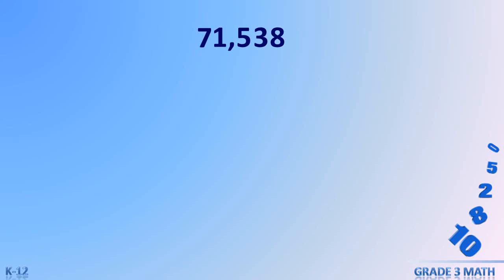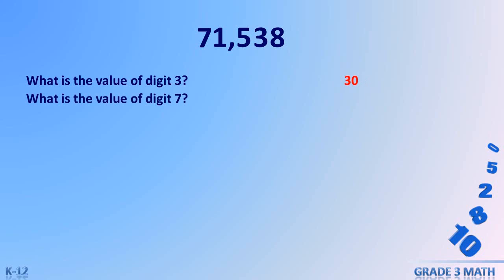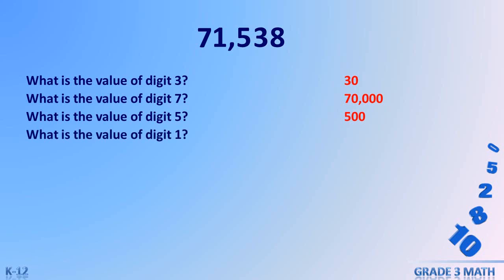Using the number 71538 as an example, try to answer the following questions. What is the value of digit 3? The answer is 30. What is the value of digit 7? The answer is 70,000. What is the value of digit 5? The answer is 500. What is the value of digit 1? The answer is 1000. What is the value of digit 8? The answer is 8.